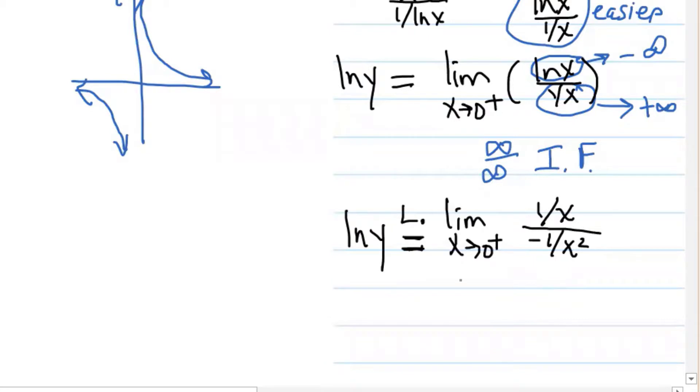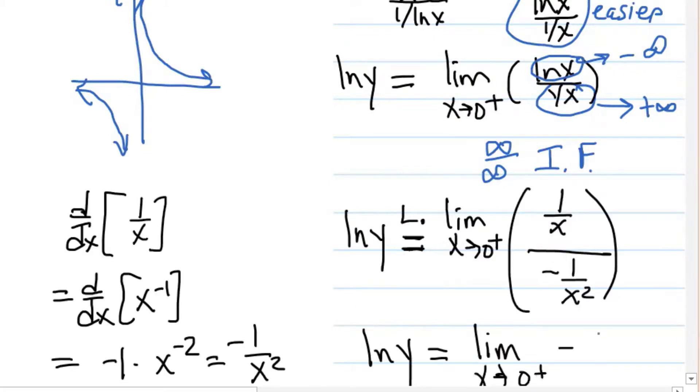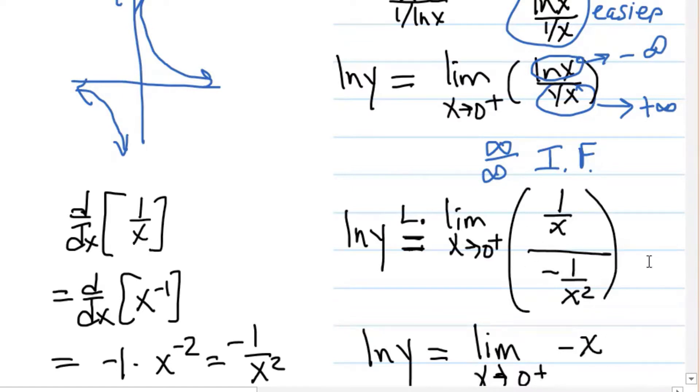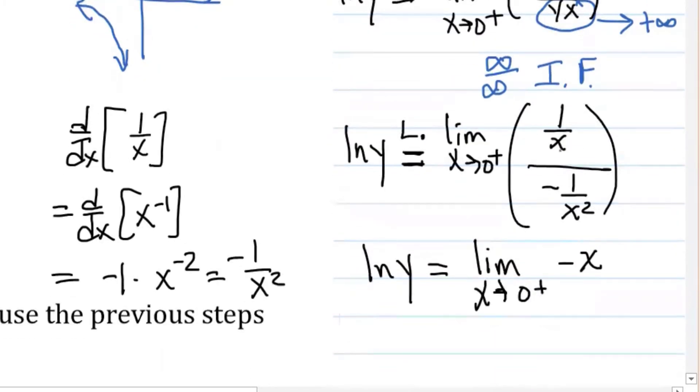Now let's simplify a bit. I'm going to think of it instead of dividing by negative one over x squared, let's think of it as multiplying by negative x squared. Good. I heard someone over there whisper it. Negative x. So that means that the limit is what? Zero.